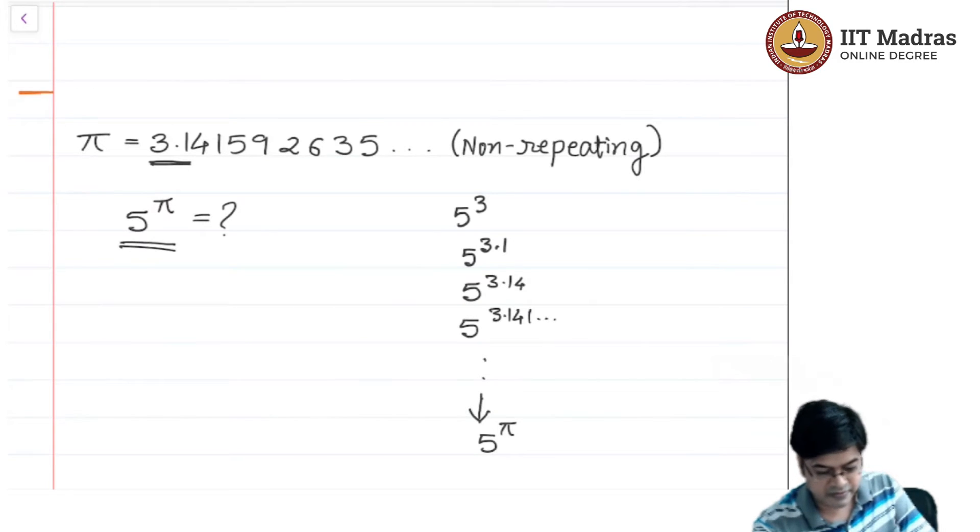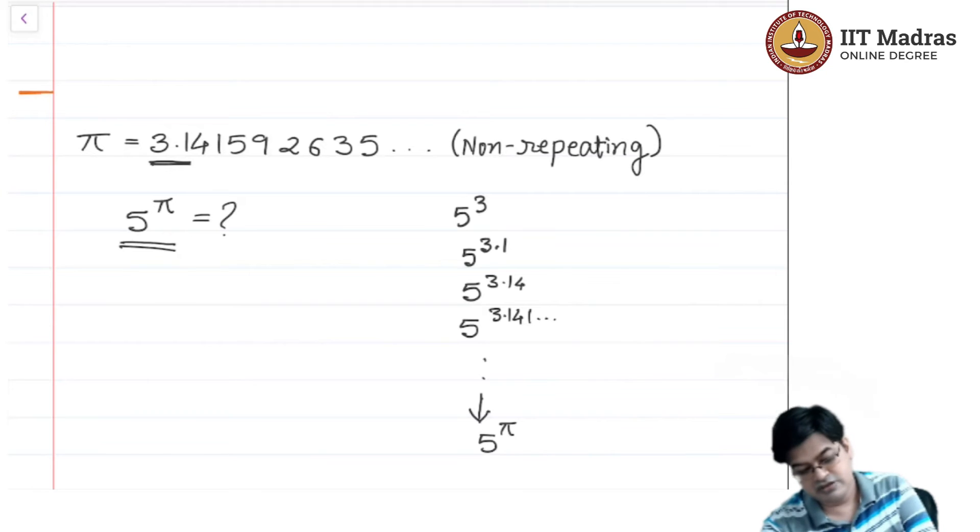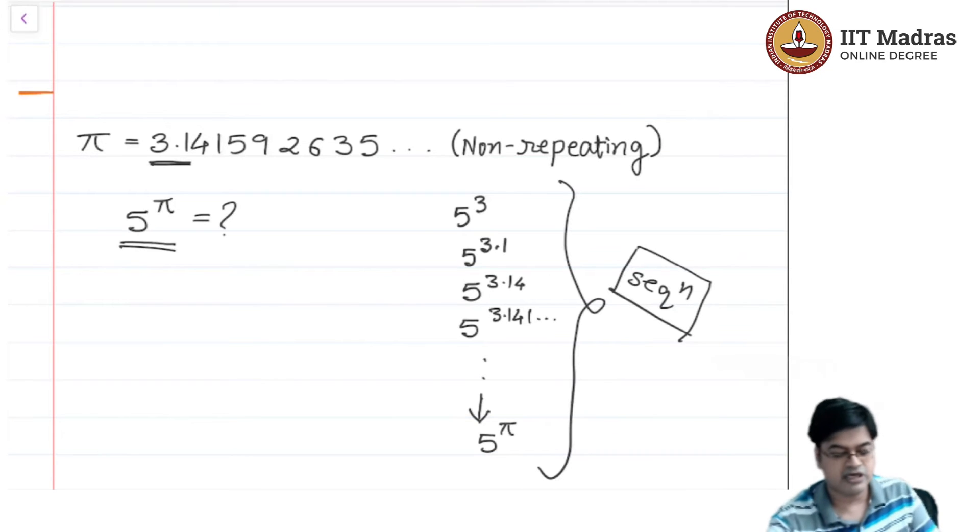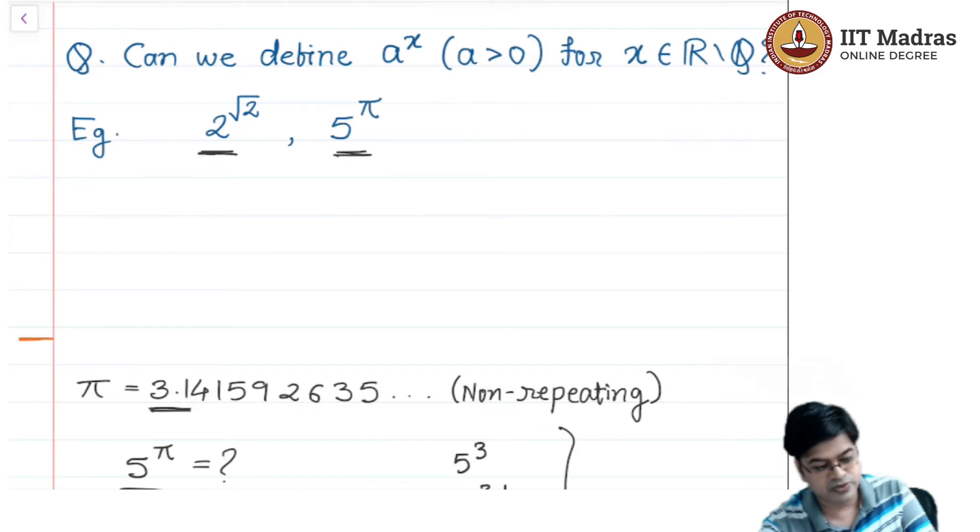In principle, I can actually define a raised to irrational number. This you will study when you study the topic of sequences, which is outside the scope of this syllabus. We will assume you have to trust me on this, that 5 raised to pi is well defined.